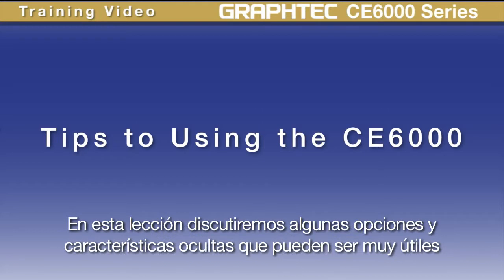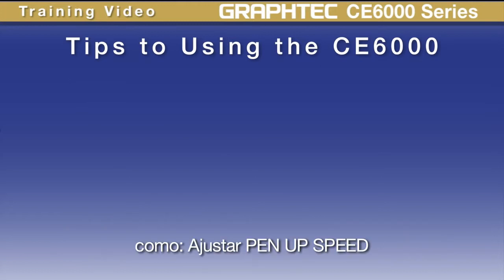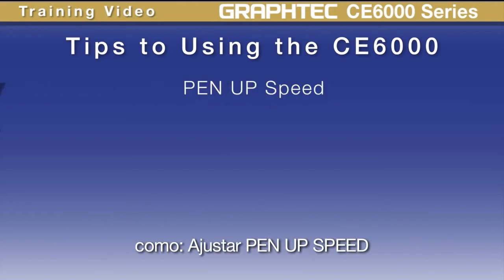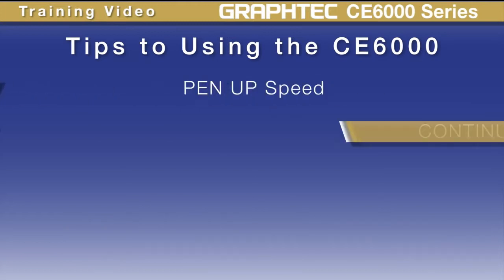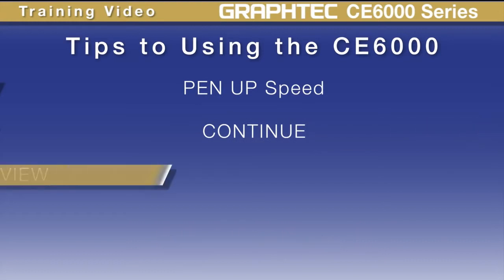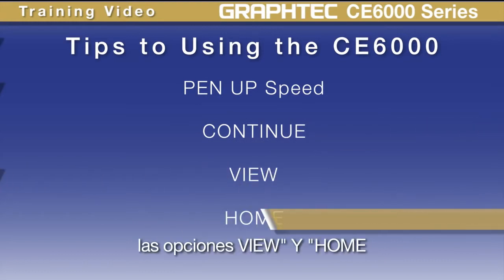In this lesson we'll discuss some options and hidden features that are helpful for when the need arises. Some of these are adjusting the pen up speed, the continue function, and the view and home options.